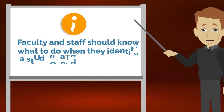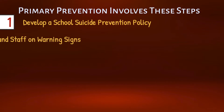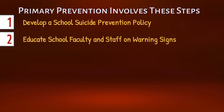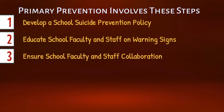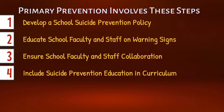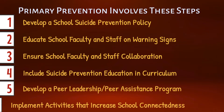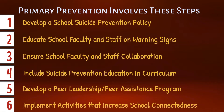Faculty and staff should know what to do when they identify a student at risk. Primary prevention involves the following steps: develop a school suicide prevention policy, educate school faculty and staff on warning signs, ensure school faculty and staff collaboration, include suicide prevention education in the curriculum, and develop a peer leadership and peer assistance program.